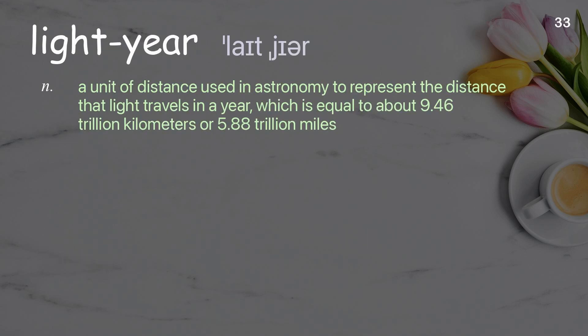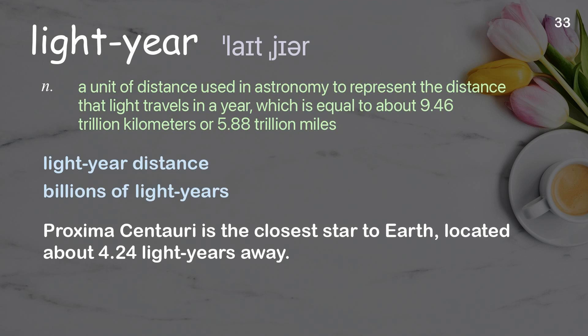Light year: a unit of distance used in astronomy to represent the distance that light travels in a year, which is equal to about 9.46 trillion kilometers or 5.88 trillion miles. Examples: light year distance; billions of light years. Proxima Centauri is the closest star to Earth, located about 4.24 light years away.